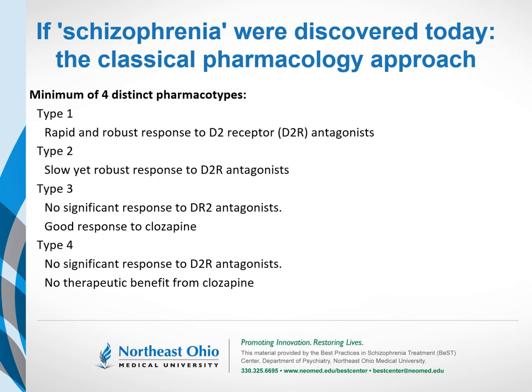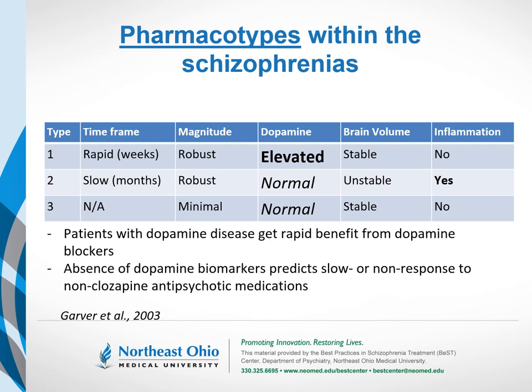Dennis Garver and colleagues from the University of Louisville used the pharmacotype concept and were able to match pharmacotypes to biological markers. In Type 1 — the rapid robust responders — patients had evidence of increased dopamine metabolites in their blood: the high dopamine subgroup. In Types 2 and 3, dopamine levels were normal. Type 2 slow responders had biomarkers of inflammation, whereas in Type 3, the non-responders to non-clozapine antipsychotics, there was no elevated dopamine signal and the inflammation markers characterizing Type 2 were absent.